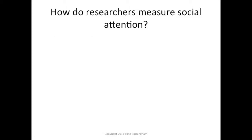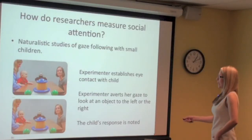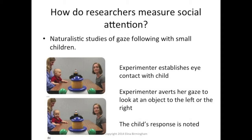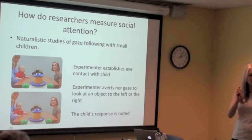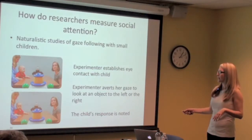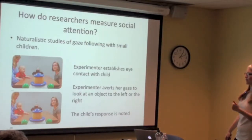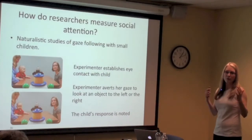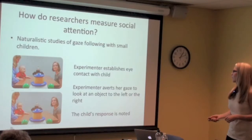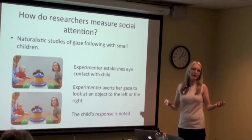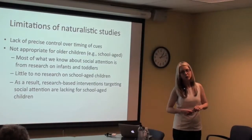How do we measure social attention? You can have an experimenter sitting across from a caregiver and baby. The experimenter establishes eye contact with the child, then averts their head or just their eyes — or points and looks. So there's an object on the left and an object on the right, and the baby follows the head direction. This is the main paradigm for studying social attention in really young children — a naturalistic study of gaze following.